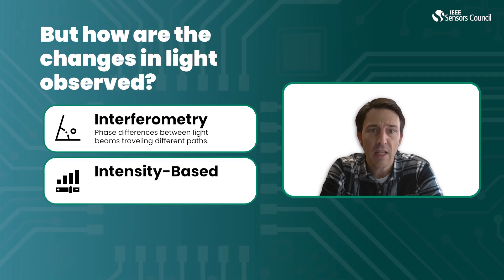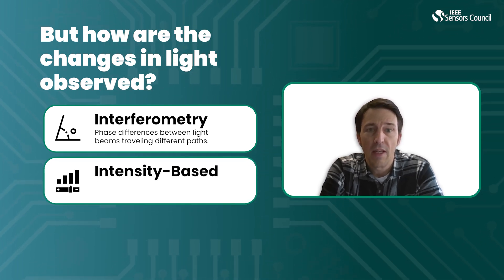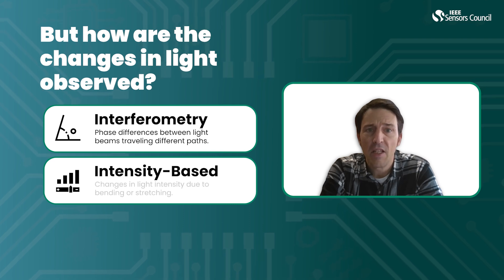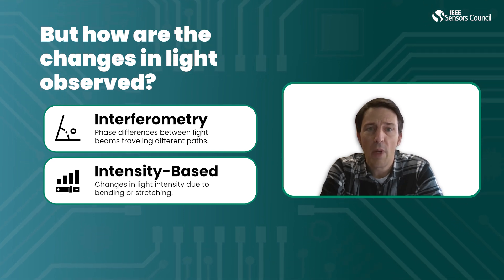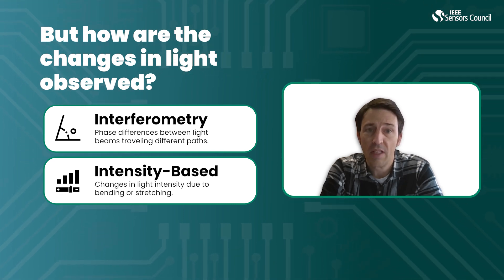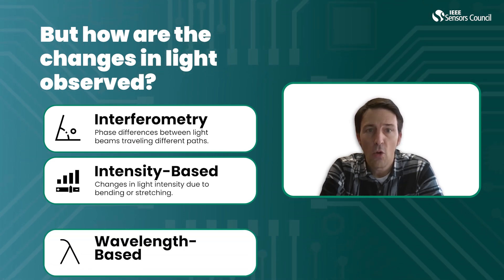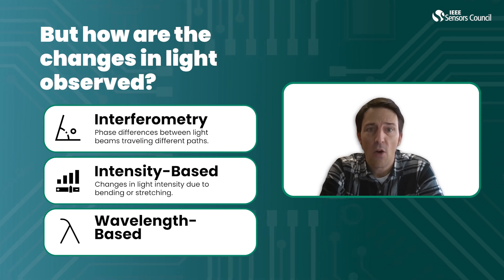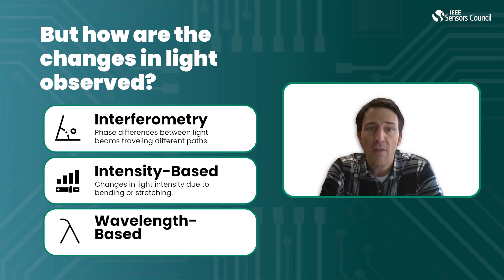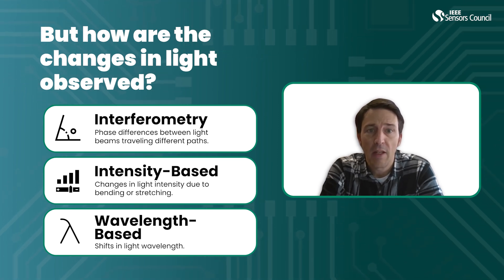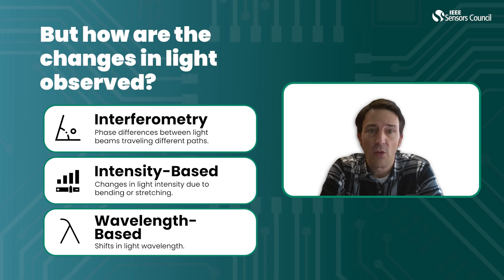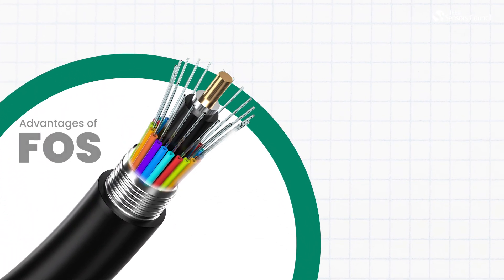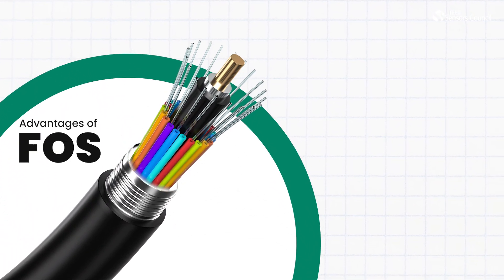Another technique is based on intensity, which detects changes in light intensity due to bending or stretching. Also, wavelength-based sensing uses shifts in light wavelength to determine environmental conditions.